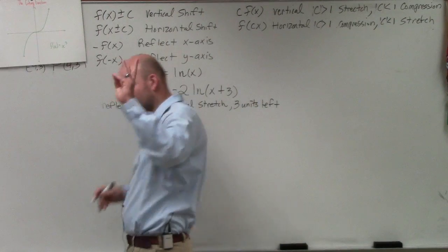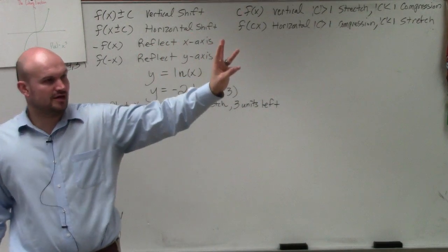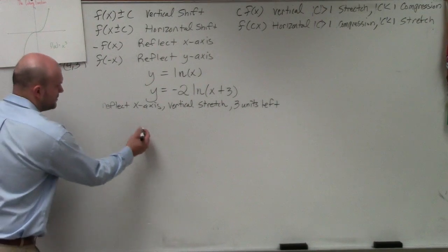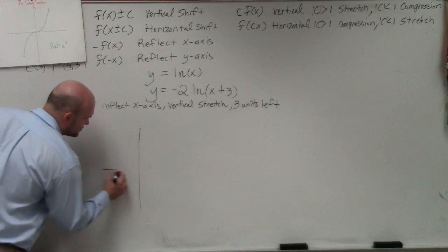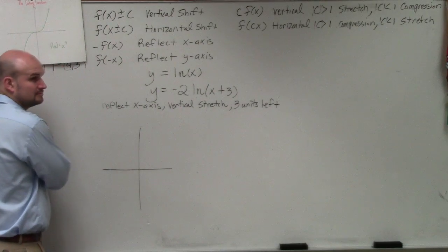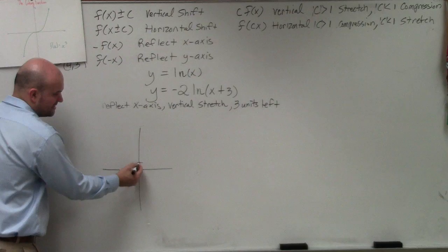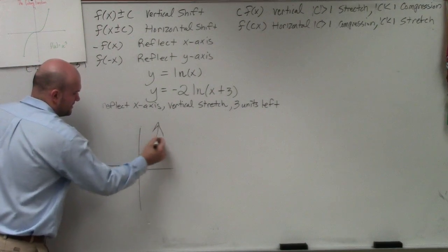So I have three transformations going on. Would everybody agree with me? Now to graph this, you guys have notes on what the ln function looks like. It crosses at 0 comma 1, and it looks something like that.